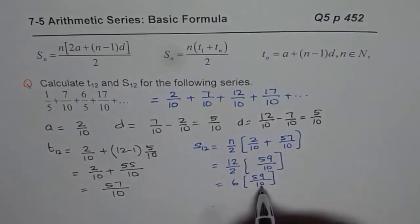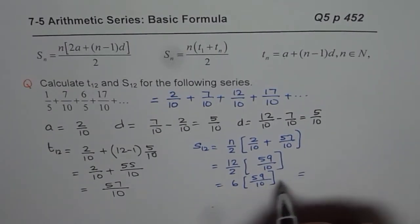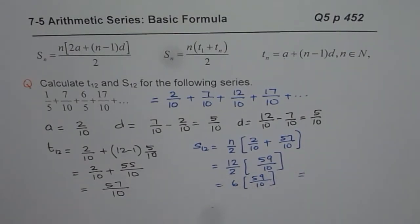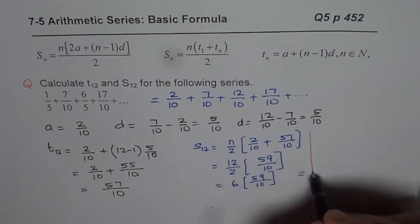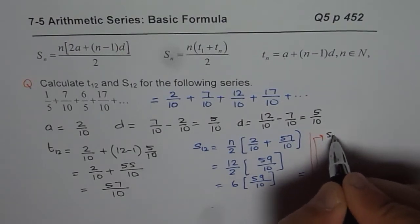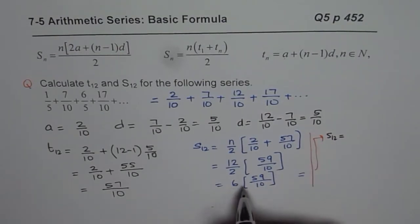6 could be simplified. We can cross them by 2. So that becomes 5. This becomes 3. So we could write this finally. Let me write here. Let me take it to this side. So we will write S of 12 is equals to 6 times 59 over 10.